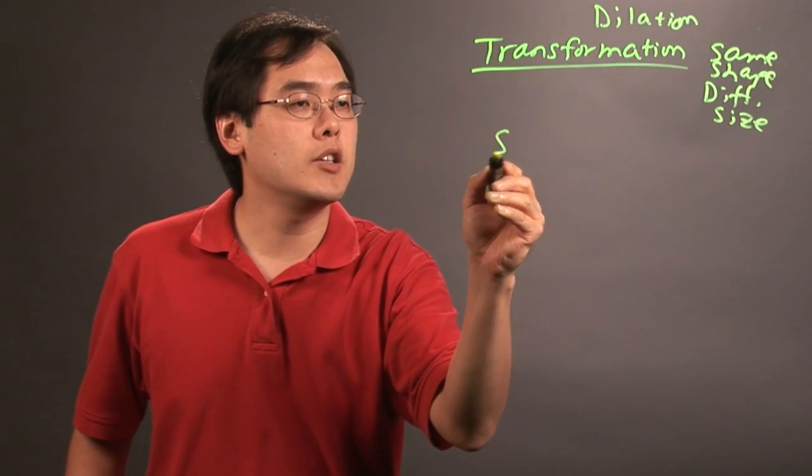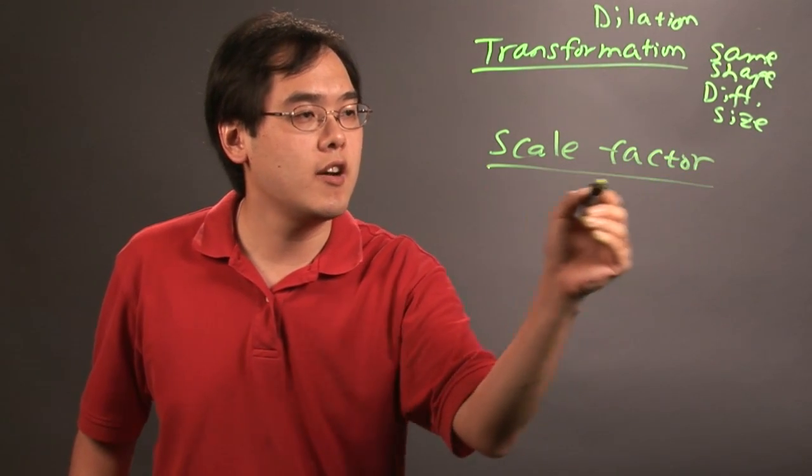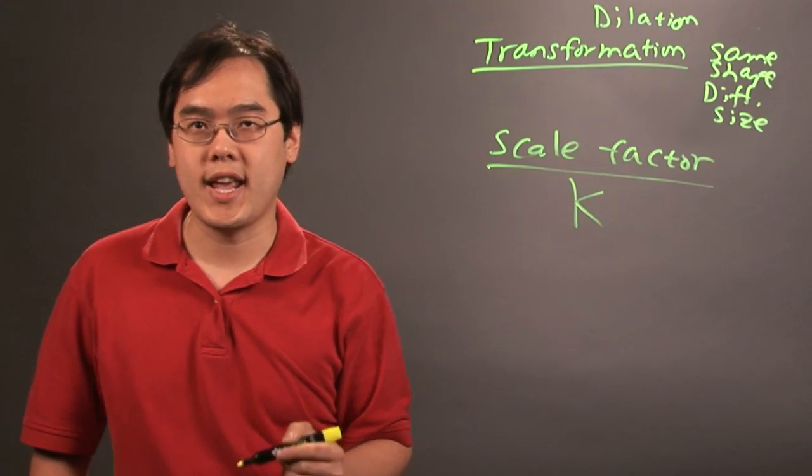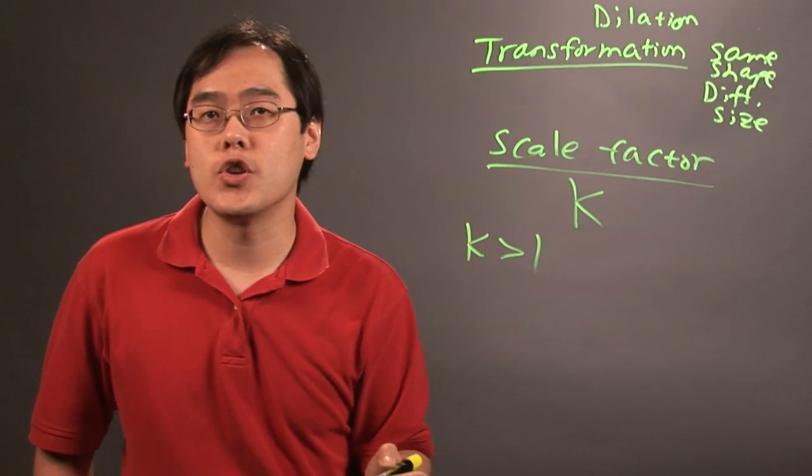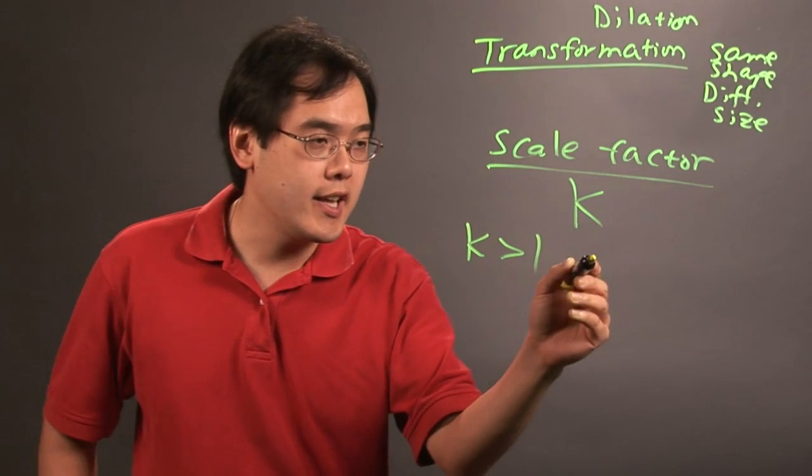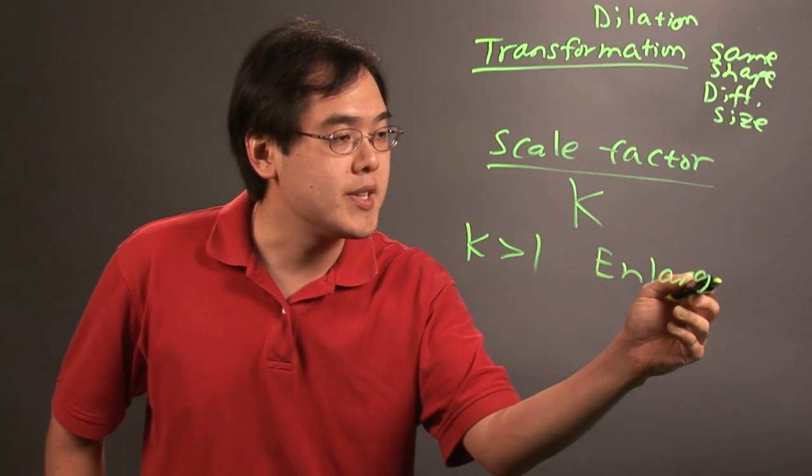So it all depends on this number known as the scale factor. The scale factor is denoted by the letter K. Now, if the scale factor is larger than 1, the dilation is going to result in what's known as an enlargement.